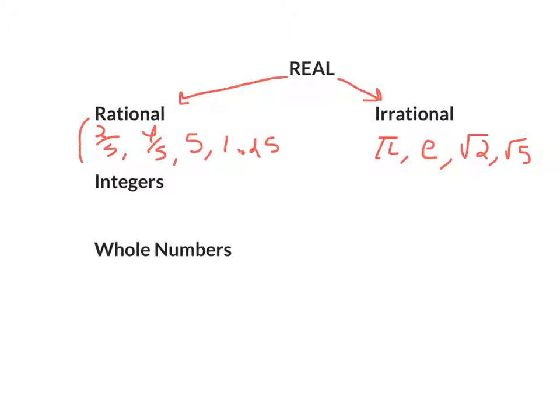Rational numbers sometimes you can break them down even further into integers. Integers are numbers such as negative four, negative three. You keep going all the way to zero, one, two, and they go forever. Notice what's missing in that list.